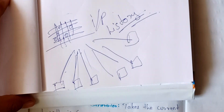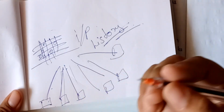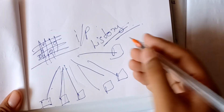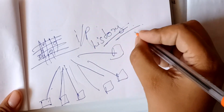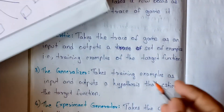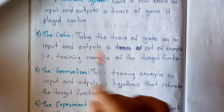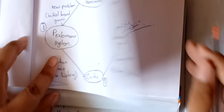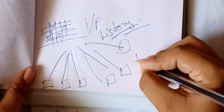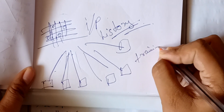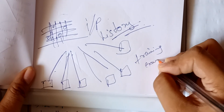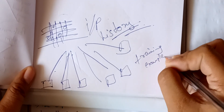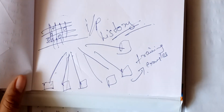What we are going to do here is generate training examples. The critic outputs training examples from the trace of games it receives.